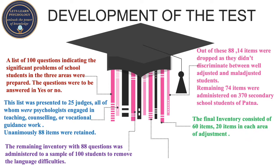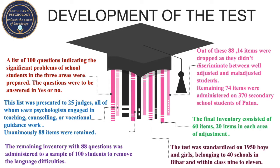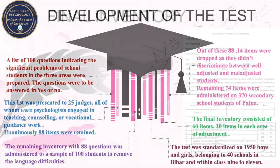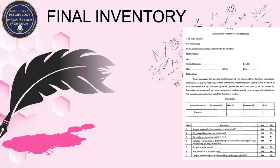The remaining 74 items were then finally administered on 370 secondary school students of Patna. The final inventory consisted of 60 items — 20 items in each area of adjustment. The test was then standardized on 1,950 boys and girls belonging to 40 schools in Bihar in classes 9th, 10th, and 11th.